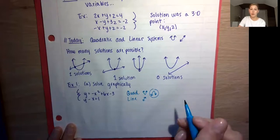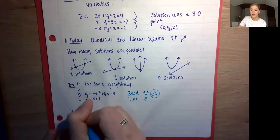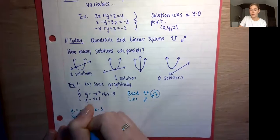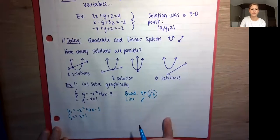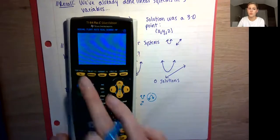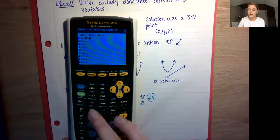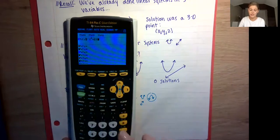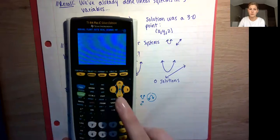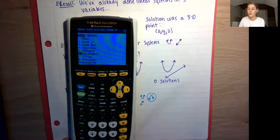We need to solve these equations for y. Our first one is already done: y1 = −x² + 6x − 3. For y2, if we solve for y, we move that x over and get y2 = x + 1. So we get out our graphing calculators, go to y equals, type in y1 = −x² + 6x − 3 and y2 = x + 1, then go to zoom standard so we can see both our parabola and our line.